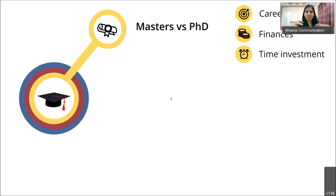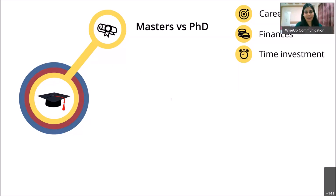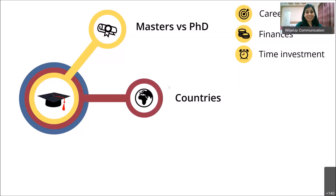On the other hand, a PhD is more time-consuming — it involves an investment of time rather than money. A PhD roughly ranges from four and a half to five years, while a masters can be finished in one and a half to two years. A PhD also requires commitment, dedication, and motivation because it's not an easy degree to complete. Think about money versus time before deciding.